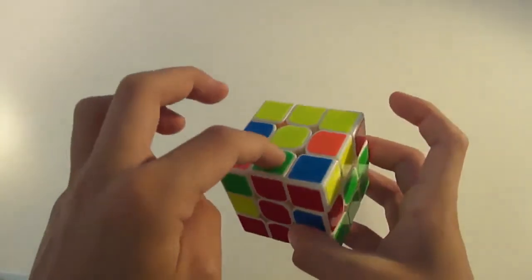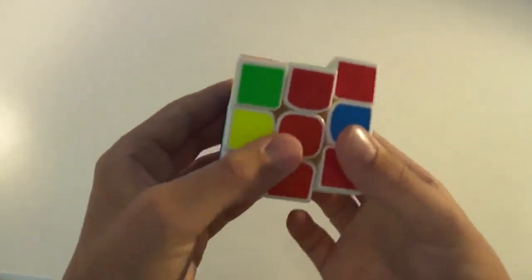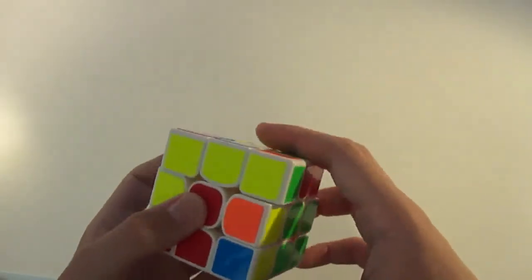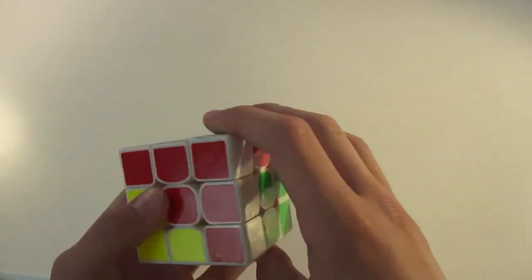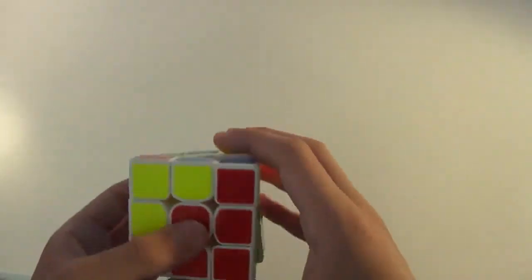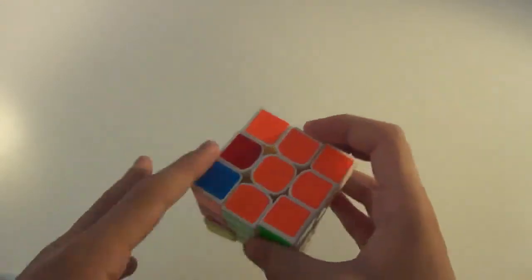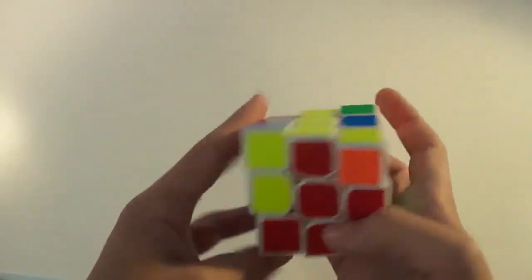So, you just, oh, this needs to go to the right side. So, you do U, R, U prime, R prime, U prime, F prime, U, F. So, now, that's in place, and while you're putting it in, it bumps the other one out, and then you just put that one in.